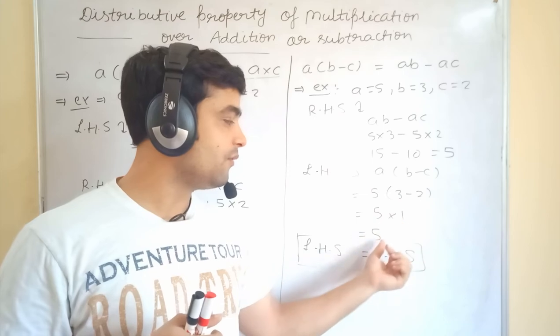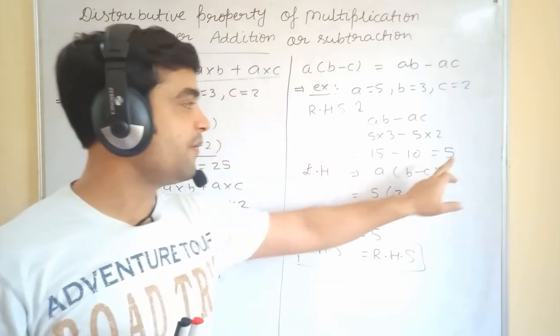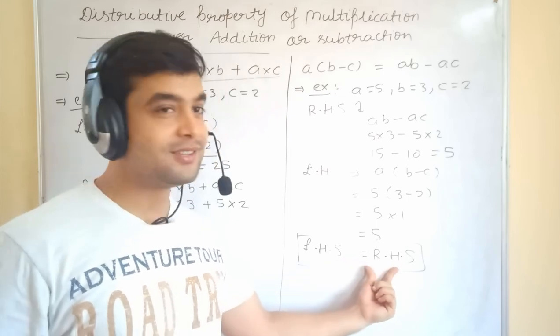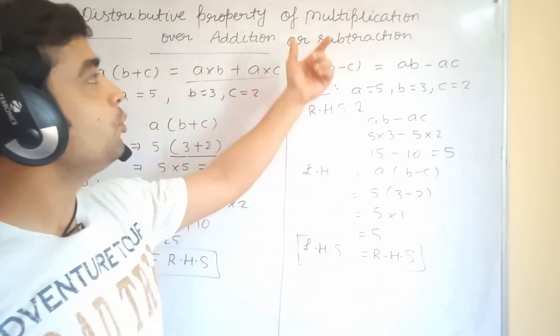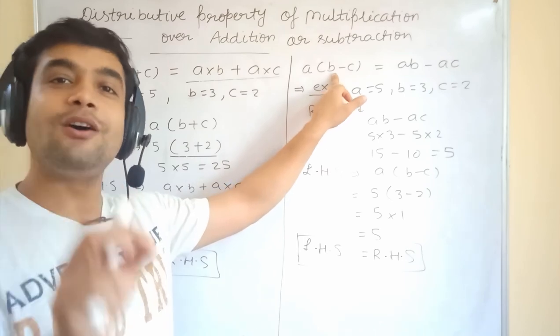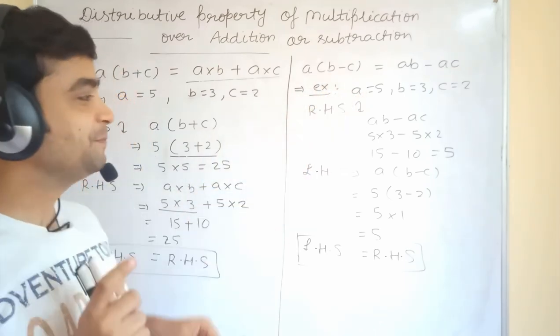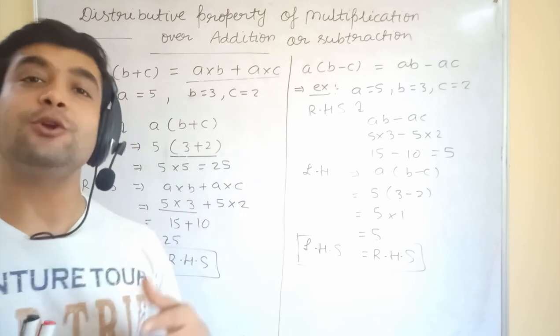So, 5 into 1, 5. Means, RHS was coming 5. LHS is 5. So, LHS is equal to RHS. This means, distributive property of multiplication over subtraction is also true. I hope you are getting it. So, this is one property that you have to memorize.